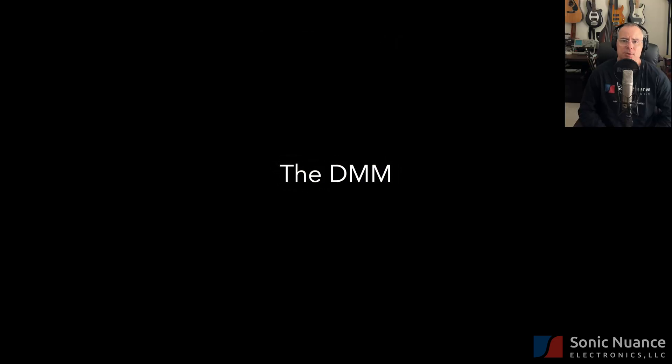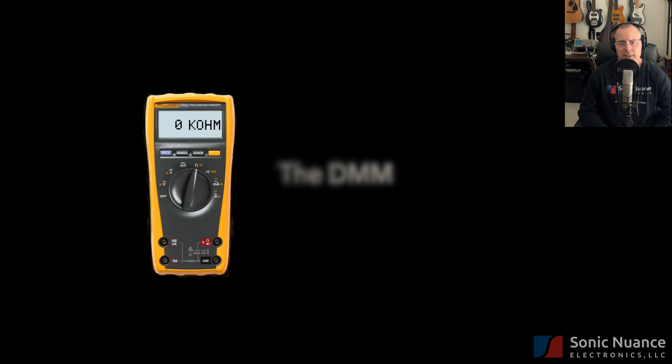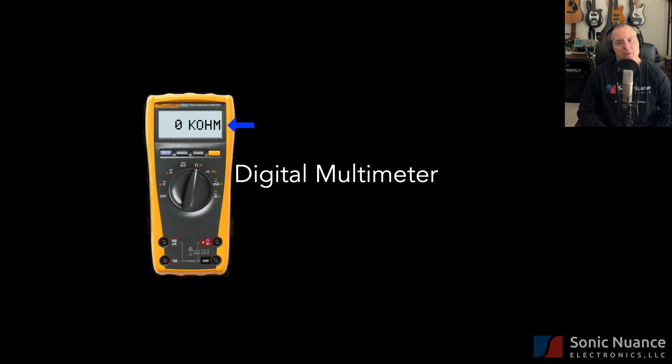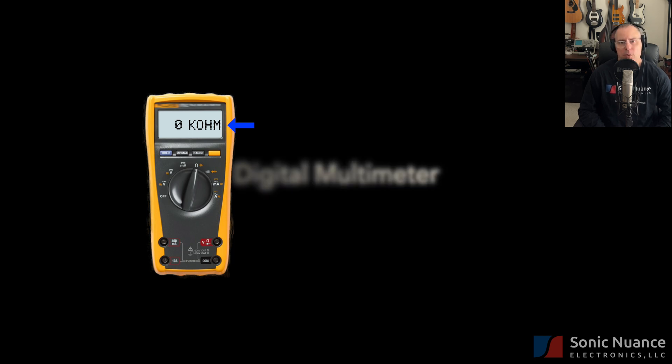Resistance can be measured with a meter like the following one right here. This is known as a DMM or digital multimeter. It can measure the resistance in units of ohms. And ohms is analogous to miles for distance.